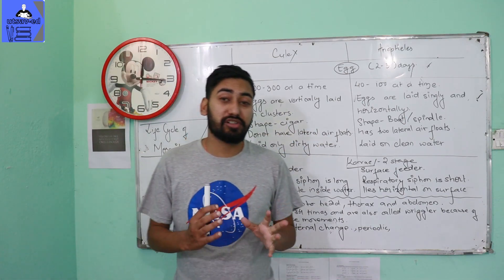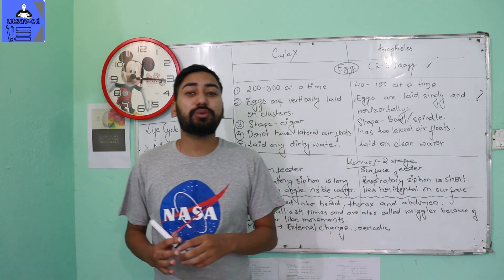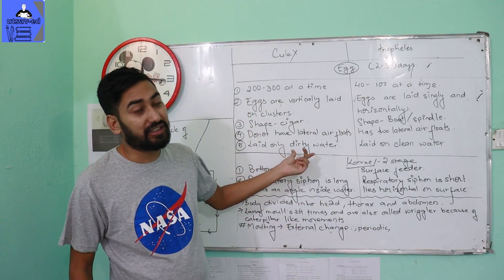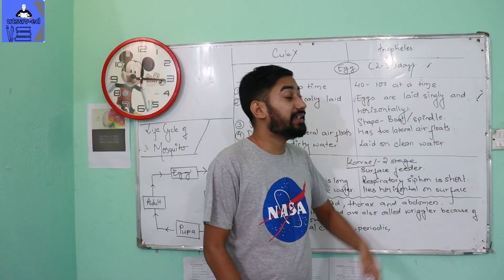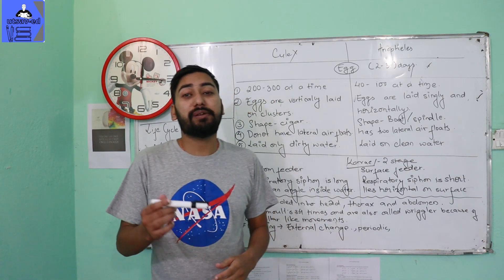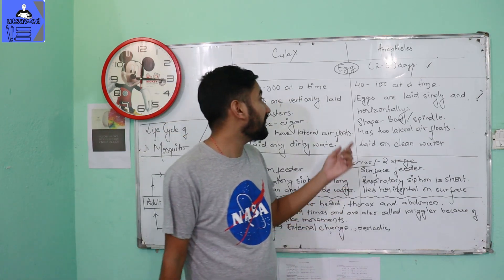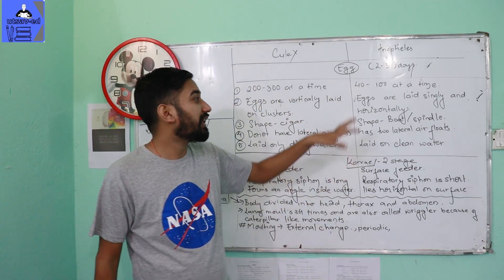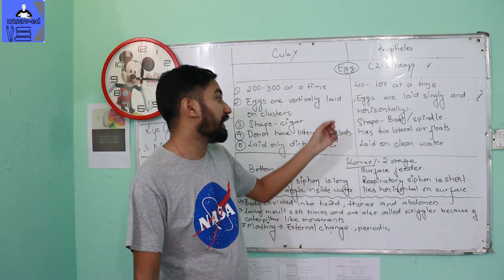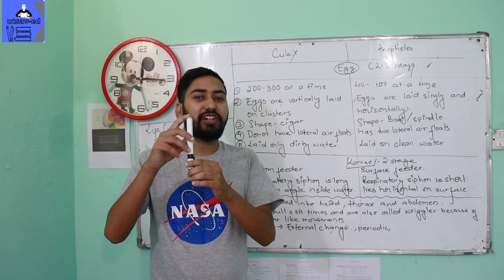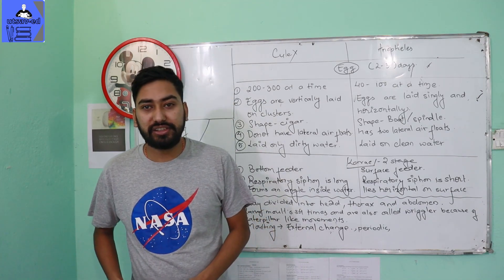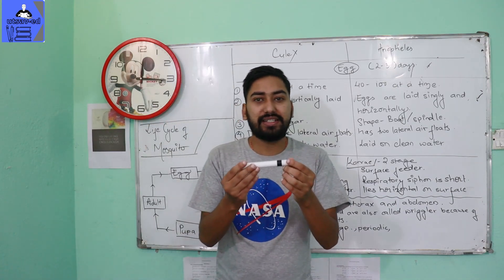This is mostly Culex, and mostly in dirty water. Culex lays eggs in a cluster. Anopheles eggs are single. The main difference is: Culex eggs are vertically laid, and Anopheles eggs are horizontally laid.